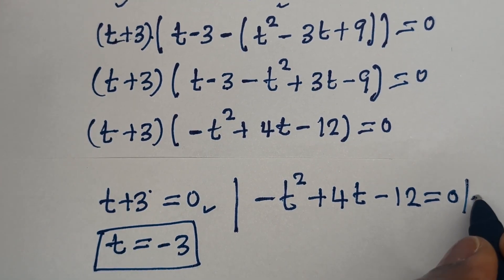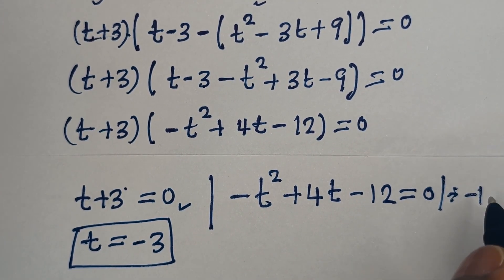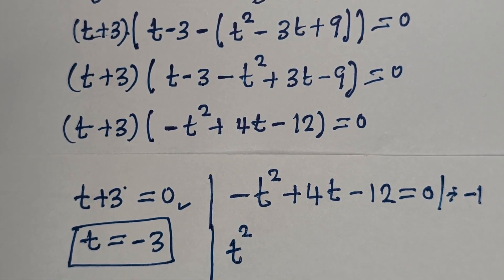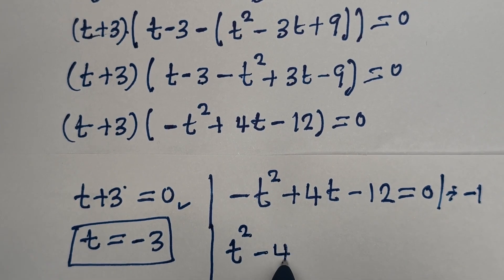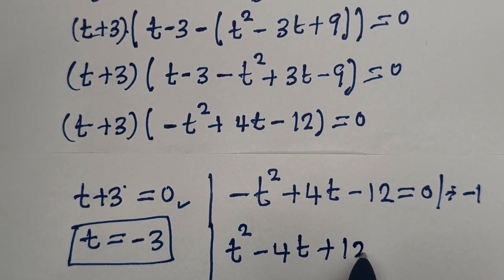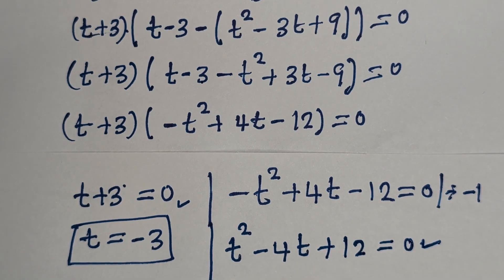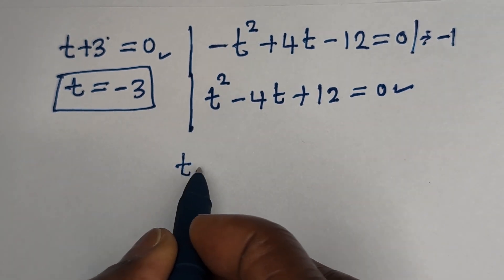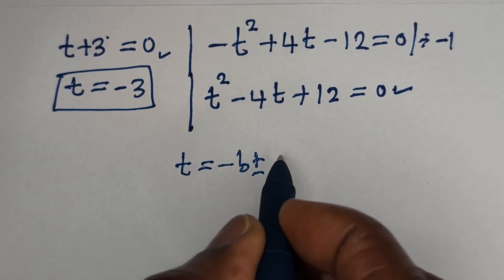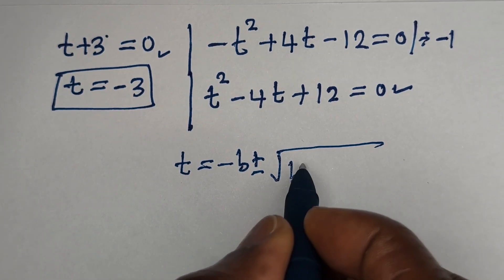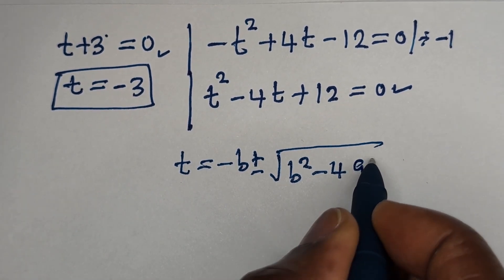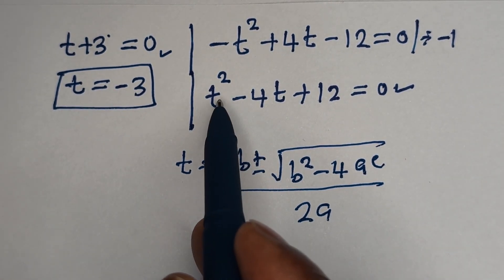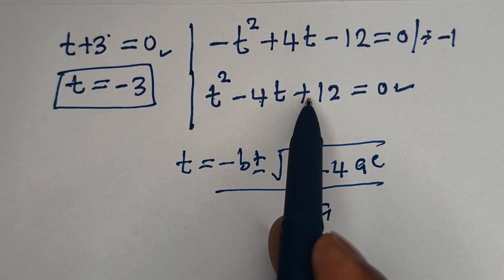From the second case, we divide the whole equation by minus 1. This gives us t squared minus 4t plus 12 is equal to 0. This is a quadratic equation, so let's solve it using the quadratic formula. Here A is equal to 1, B is equal to minus 4, and C is equal to 12.